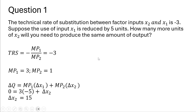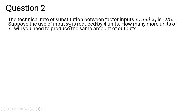Let's move on to question 2. The technical rate of substitution between factor inputs, input 2 and input 1, is minus 2 fifths. Suppose that the use of input 2 is reduced by 4 units. How many more units of input 1 will you need to produce the same amount of output? As before, we start with the technical rate of substitution as the ratio of minus the marginal product of input 1 to the marginal product of input 2. Here we're told it's minus 2 fifths.